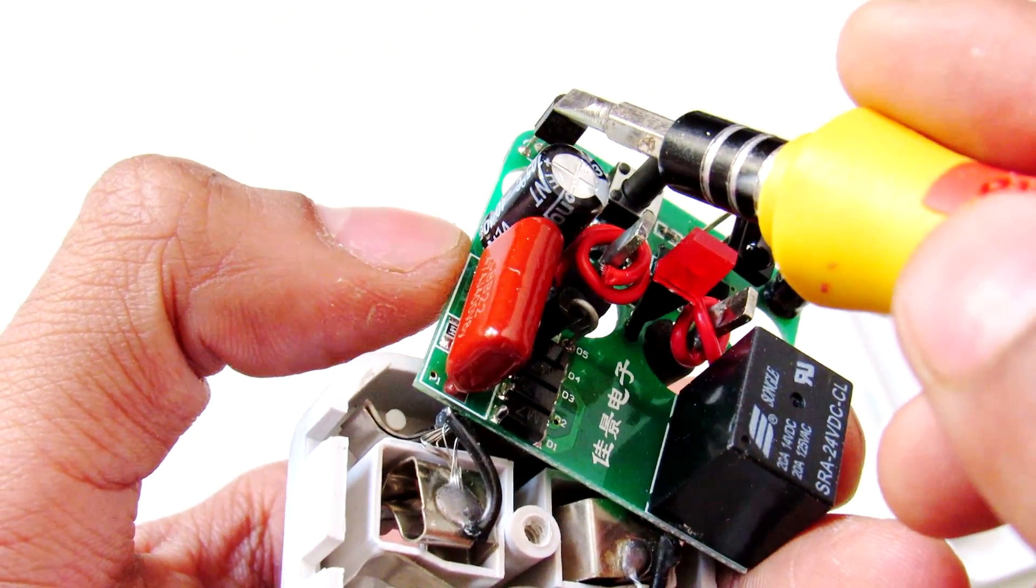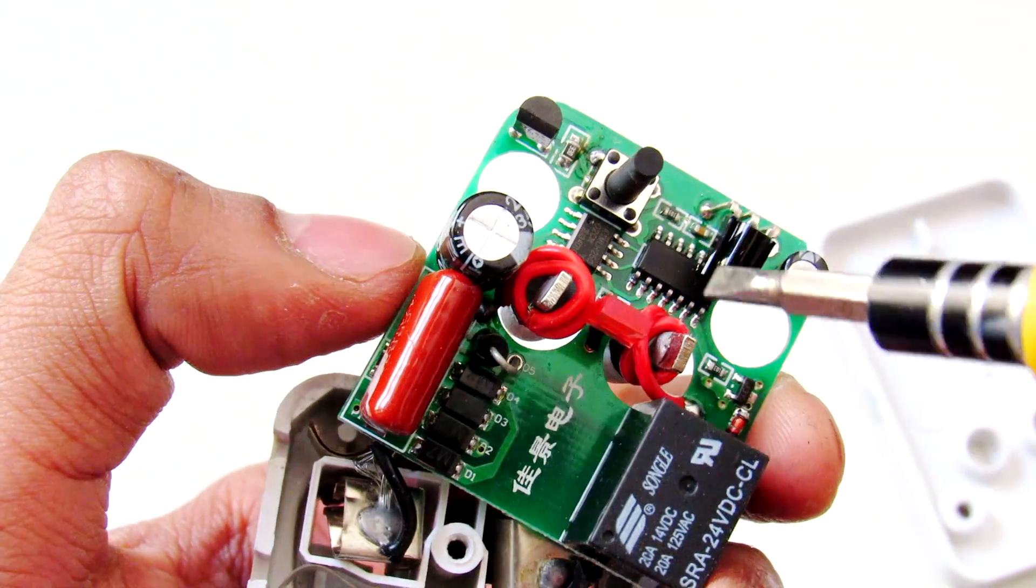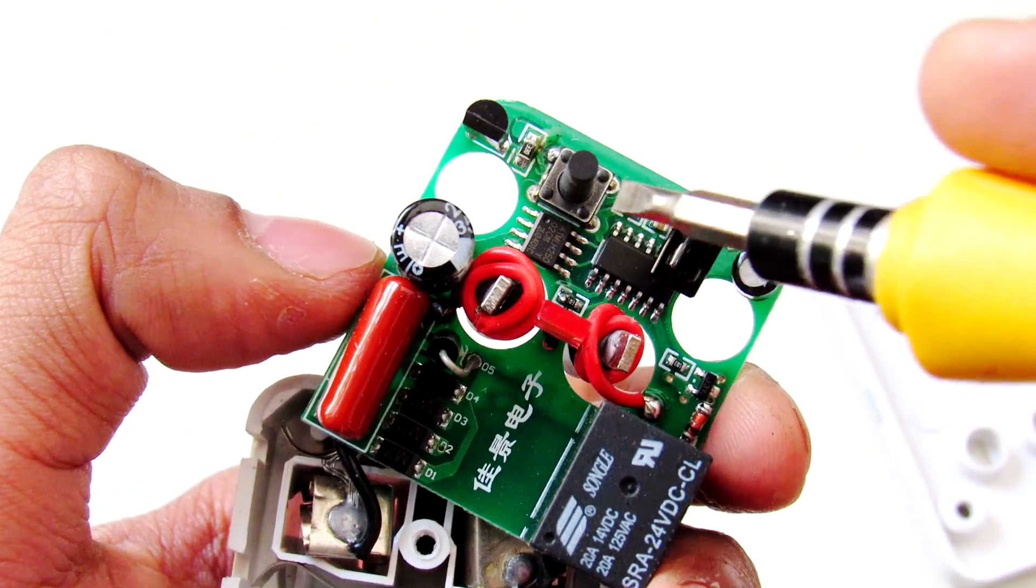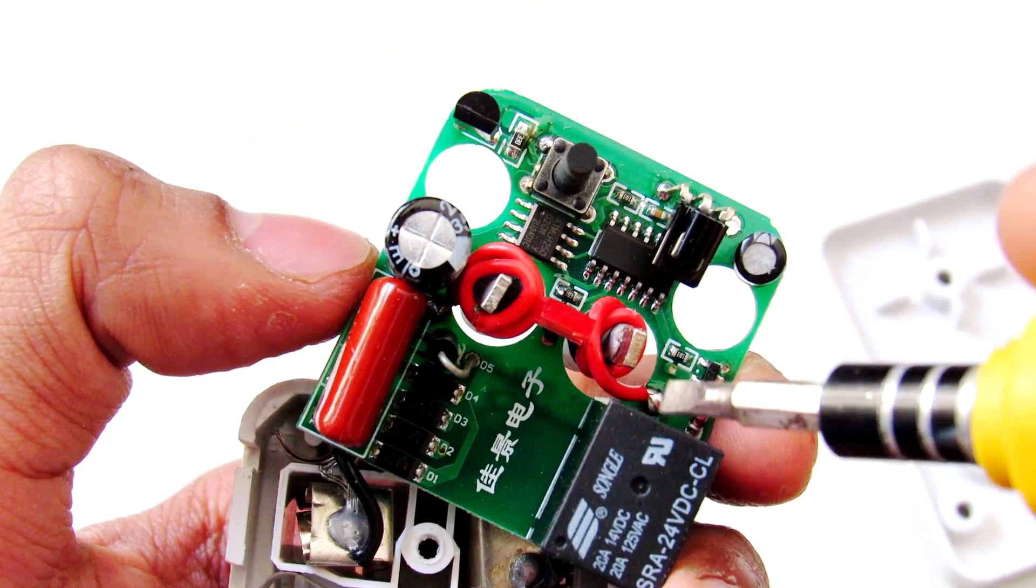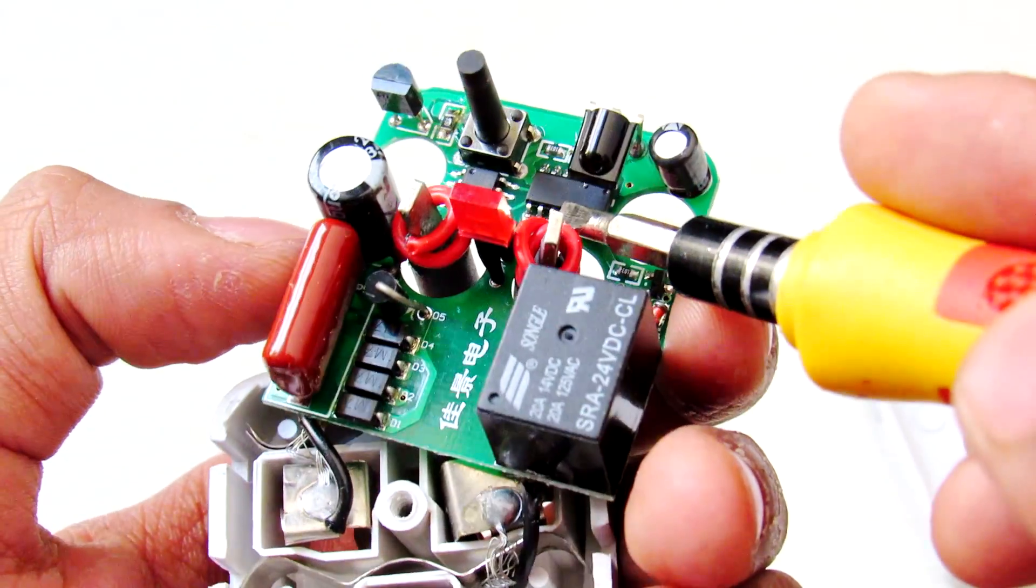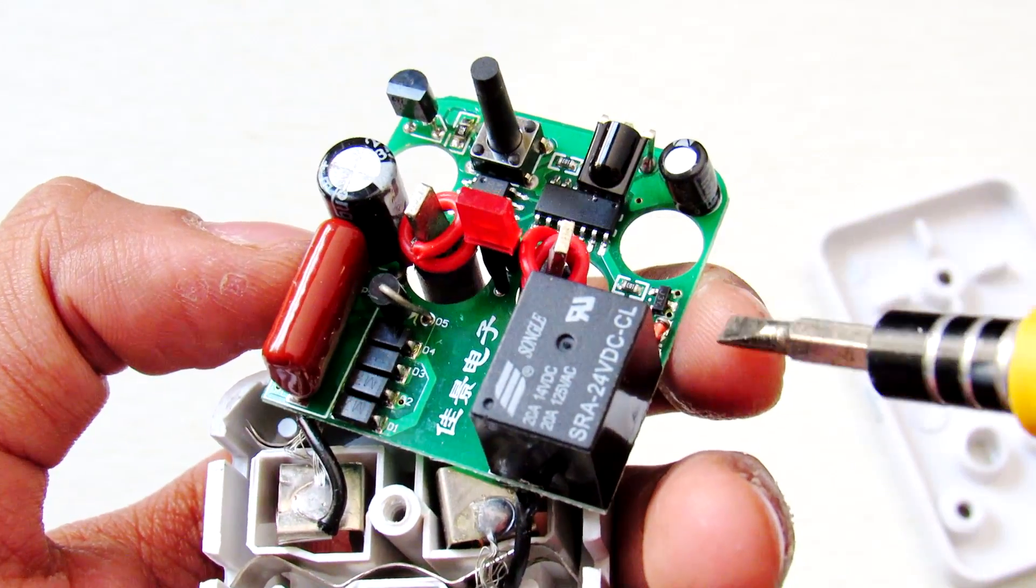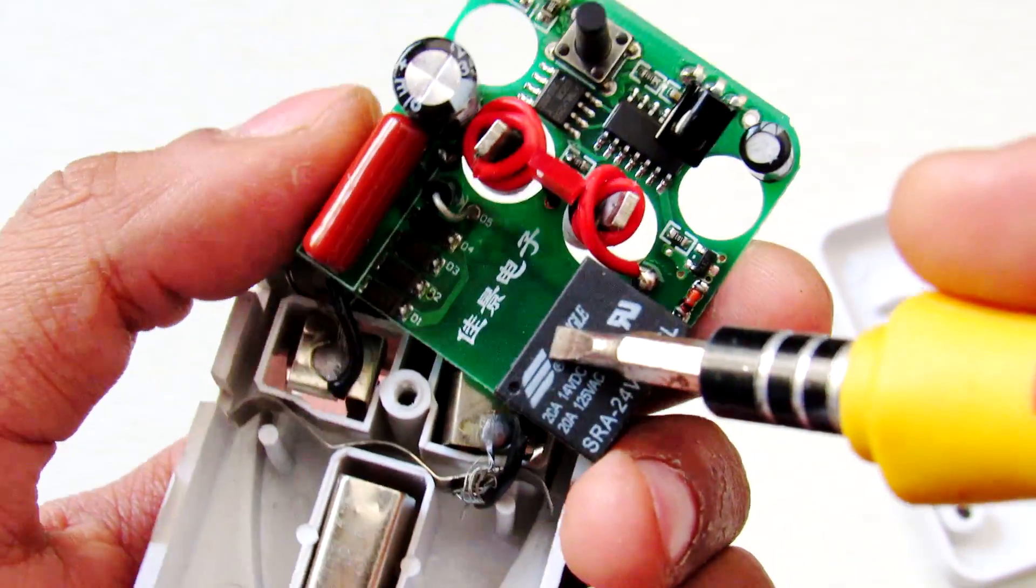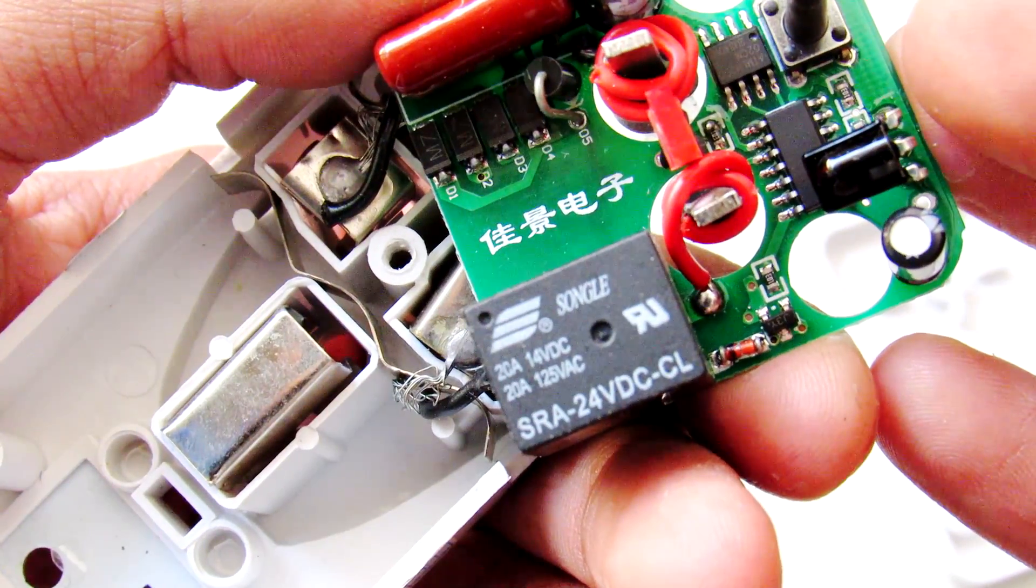Then it is the 78L05 5 volt small regulator. Then here is the memory chip to store the infrared codes. Here is the microcontroller - they have removed the markings on them. Here is the relay itself. It is rated as 14 volt DC 20 amp.